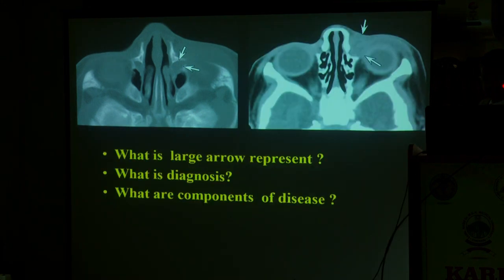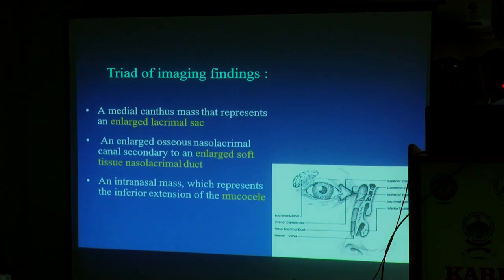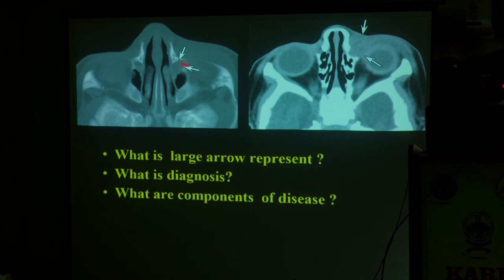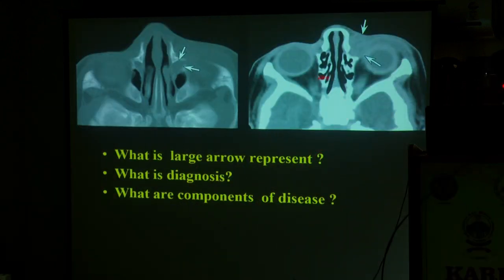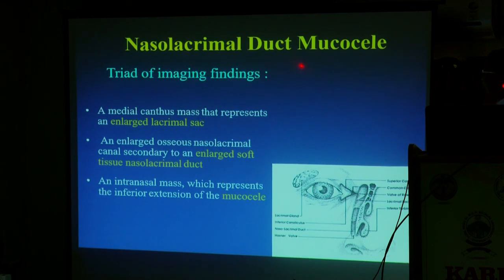Carefully see the larger arrow — what is the question, what is the mark? What is the diagnosis based on the component of the disease? There are three components — a triad of findings. You can see the medial canthus mass representing an enlarged lacrimal sac. The lacrimal duct is also dilated. There is an intranasal mass — it is nothing but a mucocele. So, the combination is nasolacrimal duct mucocele. Simple things. The component may be the same for you and me.